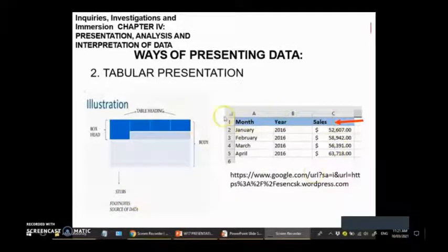We have the table heading, the body, the stubs, and footnote or source of data. Here we have the table heading for months, year, and sales. Also, we have the body, combination of text and numbers, and the source of data. This is an example of tabular data with columns and rows.